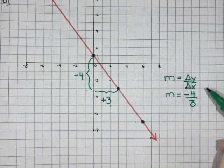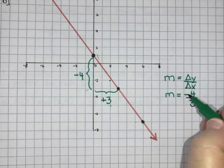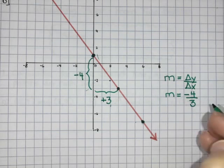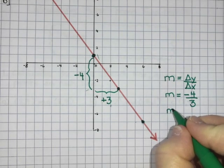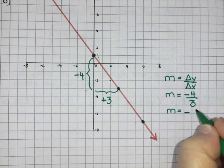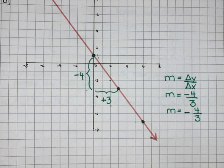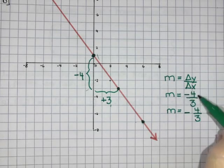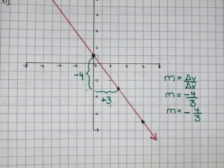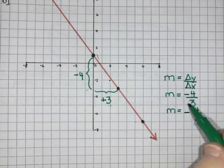Now if you want you can go one step further. Negative divided by a positive makes a negative. So we could just write the negative out front and then say it's negative 4 over 3. But if you want to leave it as negative 4 over 3 that's fine or you can write it out front as a single sign.